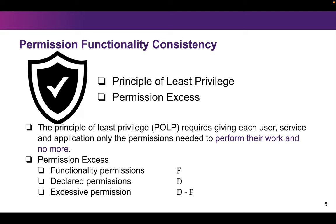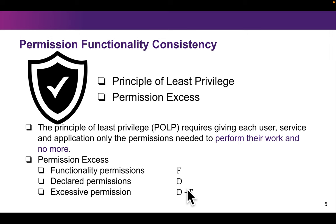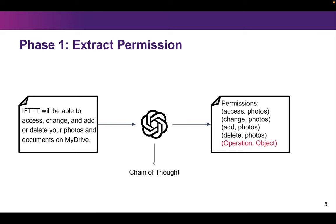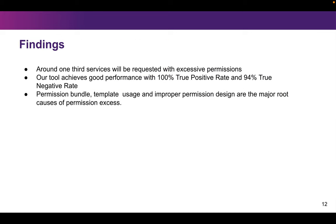So we come up with our research question: we want to check the permission and functionality consistency in current trigger action integrations. We name the functionality permissions as F and the declared permissions as D. The excessive permissions are then D minus F. Based on this, we have identified many interesting findings in our paper — please refer to the paper for details.